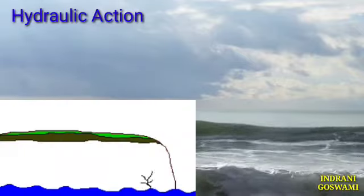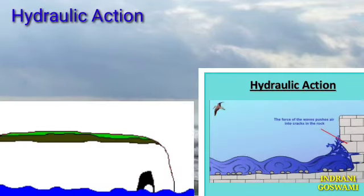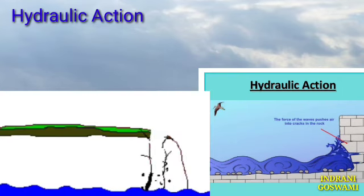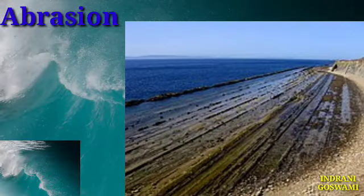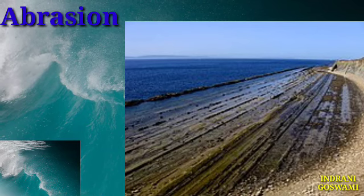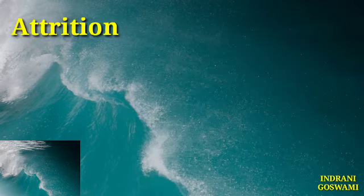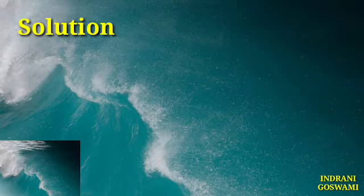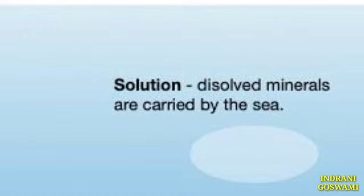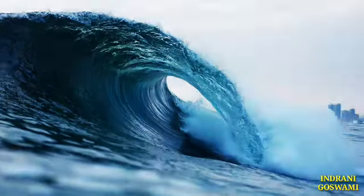Hydraulic action involves the picking up of loose material by waves and the shattering of rocks as the waves crash like giant water hammers against the cliff. Abrasion is the mechanical or frictional force responsible for wearing down rock material, forming the abrasive mechanism. Attrition is when rock fragments strike against each other and are reduced in size. Solution is when soluble rocks such as limestone, dolomite, and chalk are dissolved by the solvent action of sea waves.